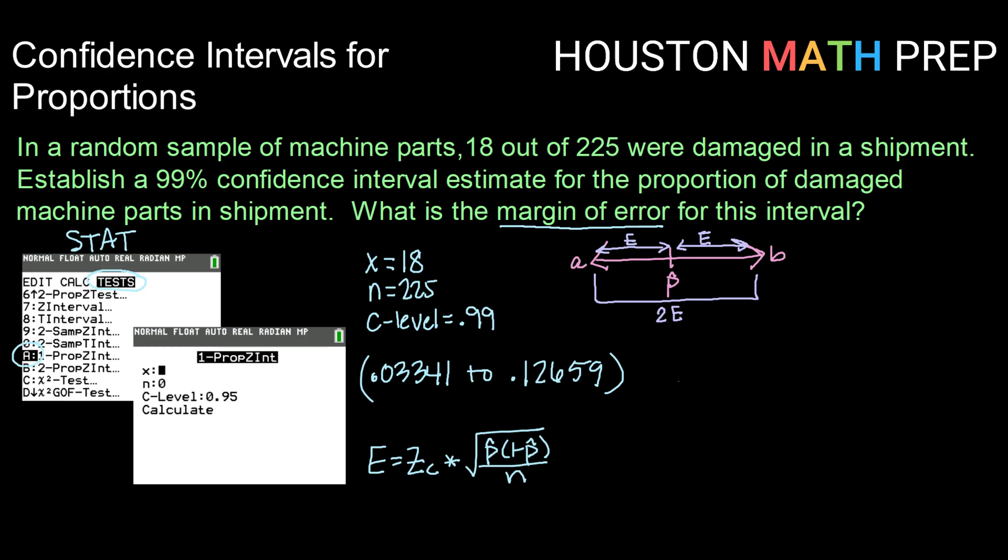That means we could take the width of our interval, or the top piece of our interval minus the bottom piece, and that would give us two times our margin of error. We could just divide that in half. So taking 0.12659 and subtracting 0.03341, and dividing that in half, we get that our margin of error is 0.04659.